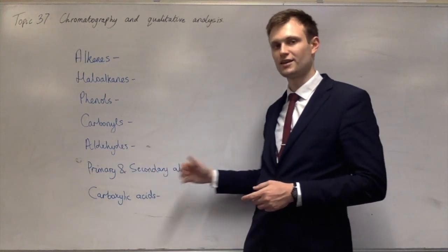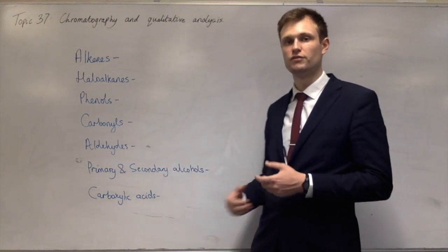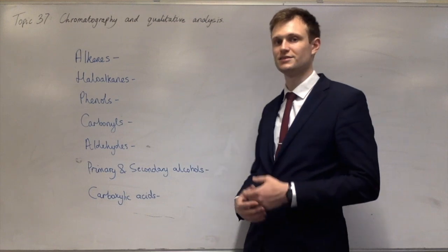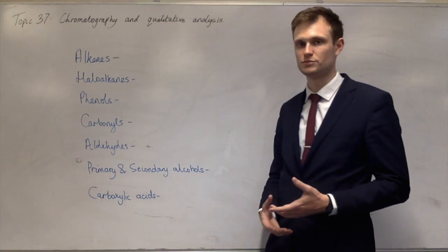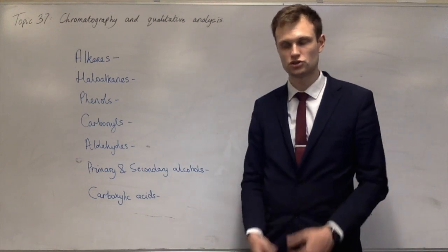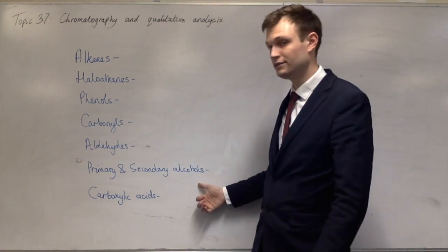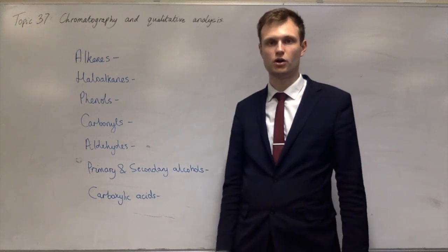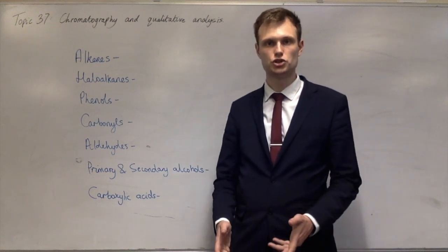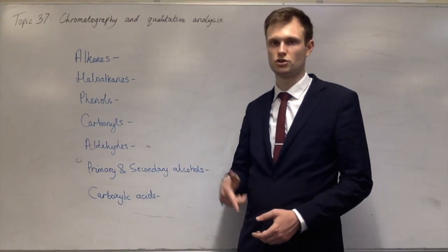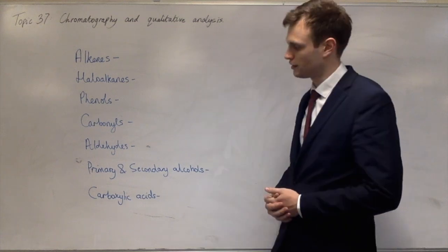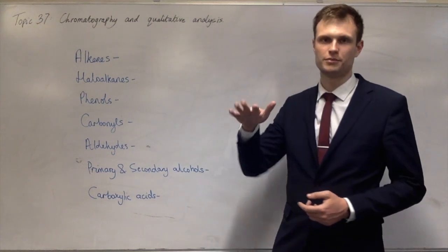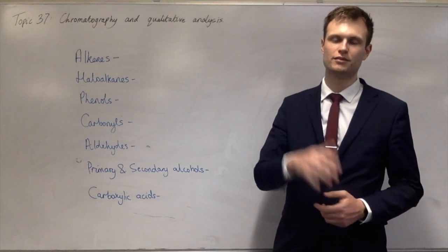You have primary and secondary alcohols. For those, what you need to do is add acidified potassium dichromate, which is orange, and if it goes green, then that means you've oxidized the alcohol and therefore reduced the dichromate to chromium 3+. And then the last one: carboxylic acids make carbonates fizz.